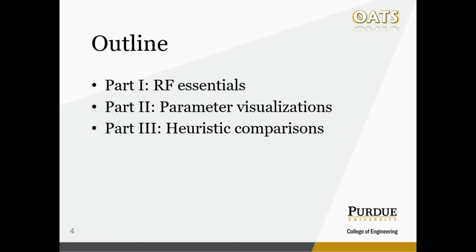In part one, I will give you some rudimental concepts and parameters in wireless communications to give you a background on what you need to pay attention to. In part two, once we learn about these parameters, I want to gather data around these parameters and give you a straightforward visualization. And in part three, I want to go through a step-by-step process to generate a comparison table in a heuristic way to help you select the wireless module or protocol for your application.